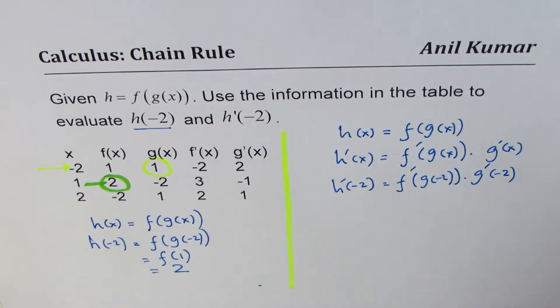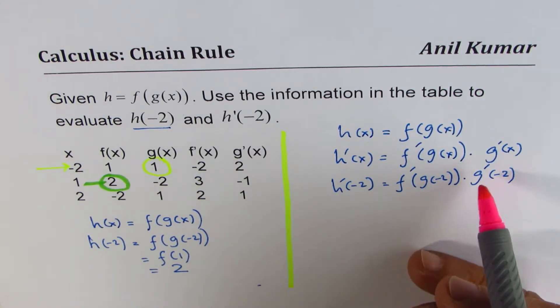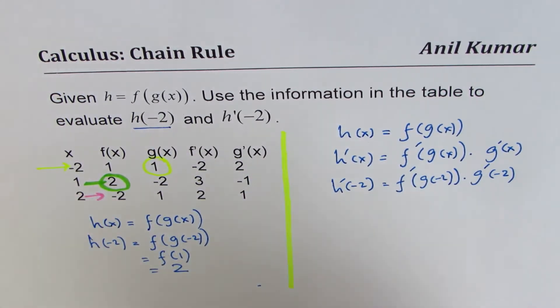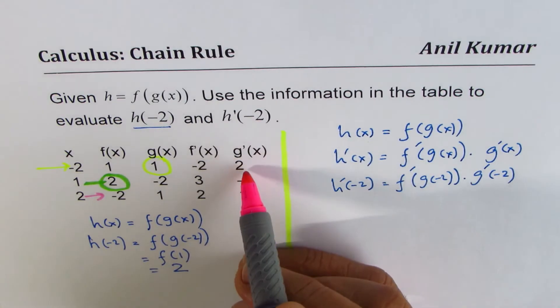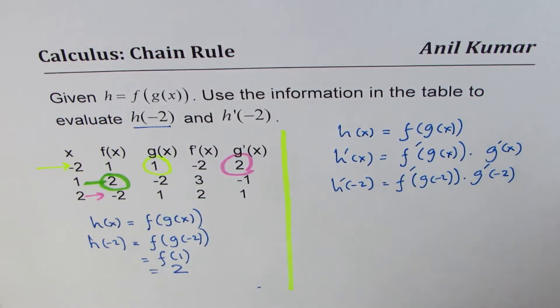Let's try to read the values from the table itself. We want to find what is the value of function g when x is 2, derivative. Sorry, minus 2. When x is minus 2, in that case, g derivative is 2. So this value is 2 for us.